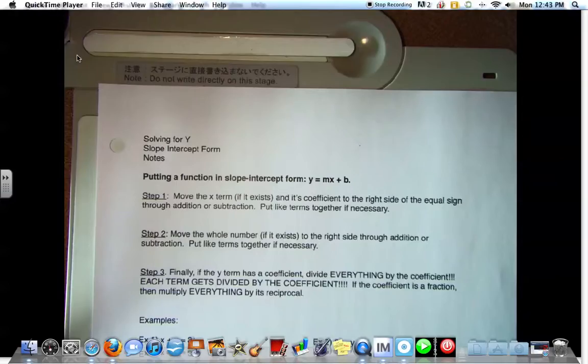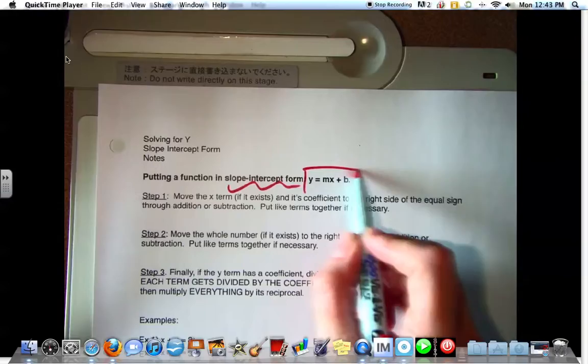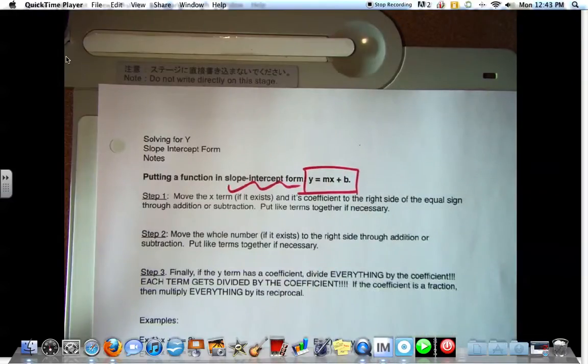All right, today we are looking at solving for Y. We've been looking at slope-intercept form. What are the two things that we need for slope-intercept form? Slope and Y-intercept, that's why it's called slope-intercept form. And it takes on this form, Y equals MX plus B.